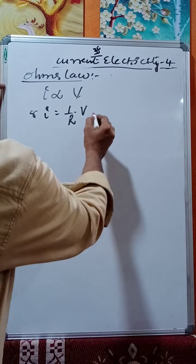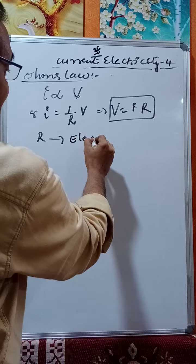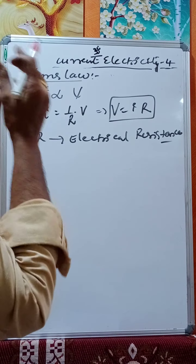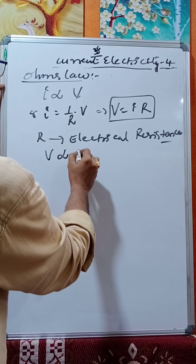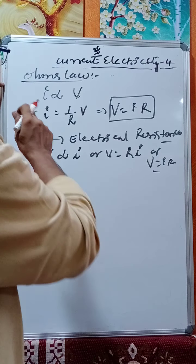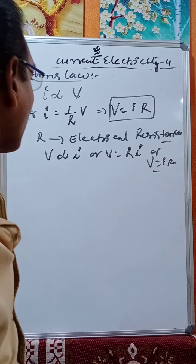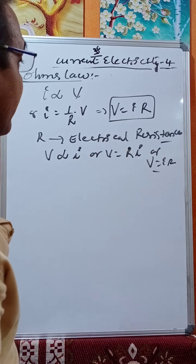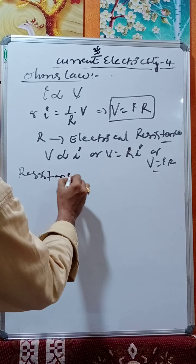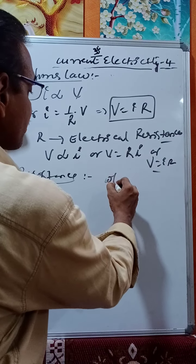This gives us V equals IR, where R is called electrical resistance. Resistance means that which opposes the flow of current — it offers some opposition to the flow of current.